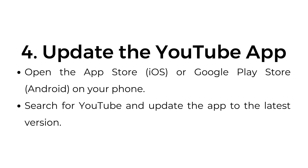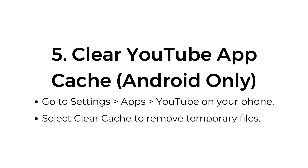Four: update the YouTube app. Open the App Store (iOS) or Google Play Store (Android) on your phone, search for YouTube, and update the app to the latest version. Five: clear YouTube app cache (Android only). Go to Settings > Apps > YouTube on your phone, and select Clear Cache to remove temporary files.